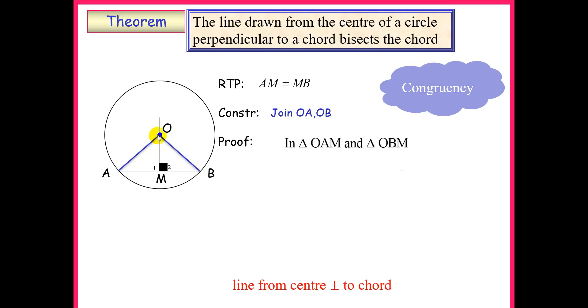So we're going to take triangle OAM and OBM. And we're looking for three things that are equal in these triangles, and also they must be able to give me one of the cases of congruency.